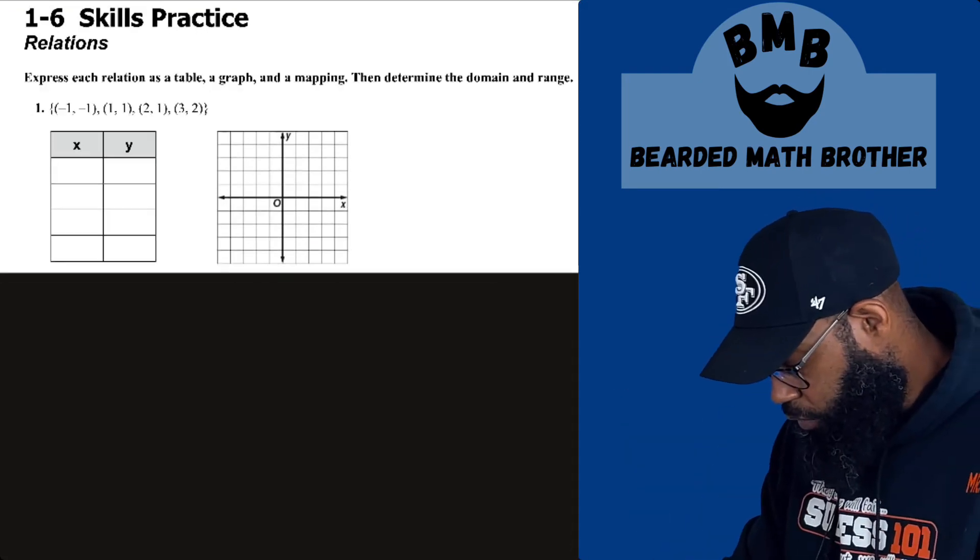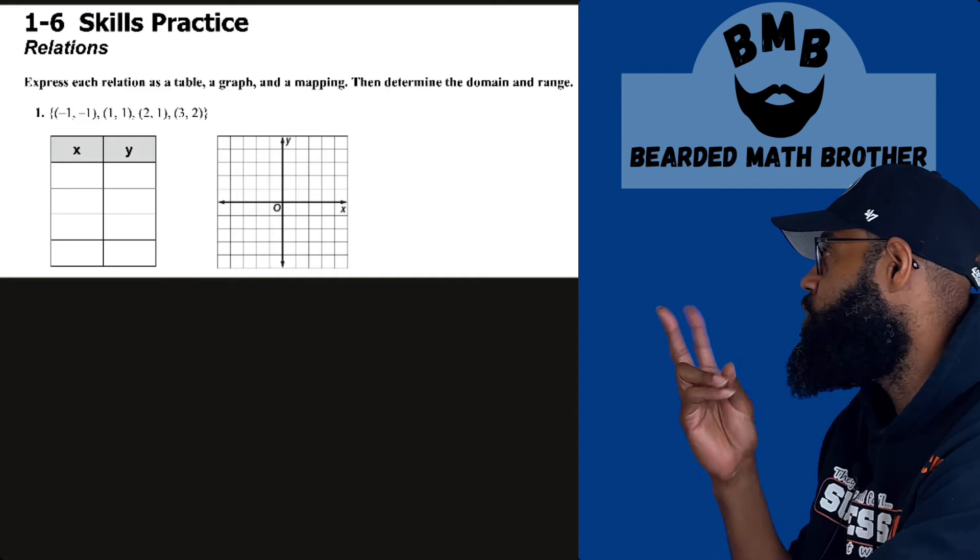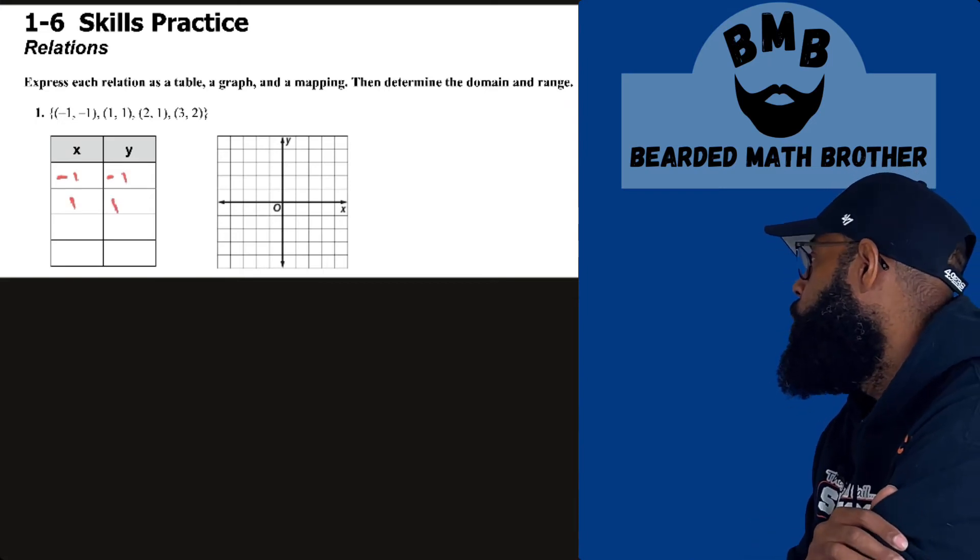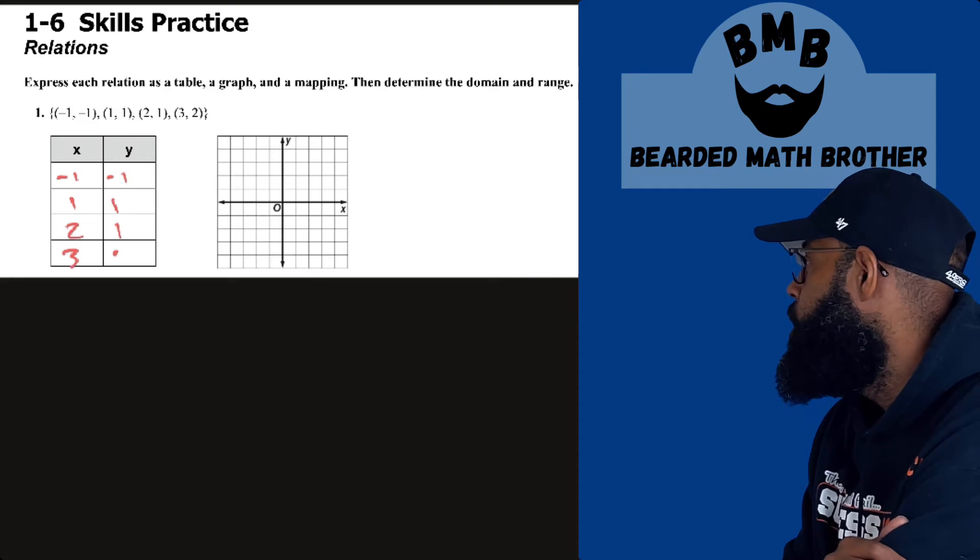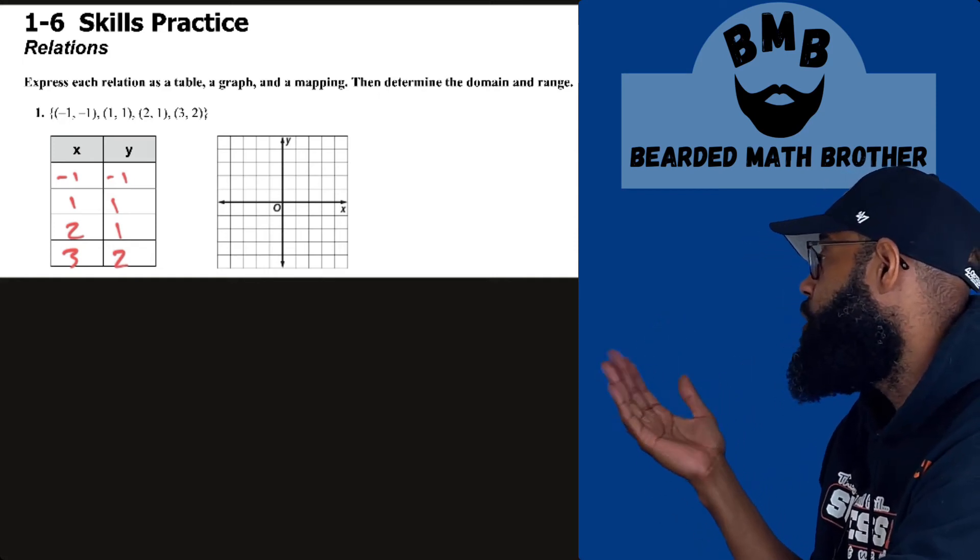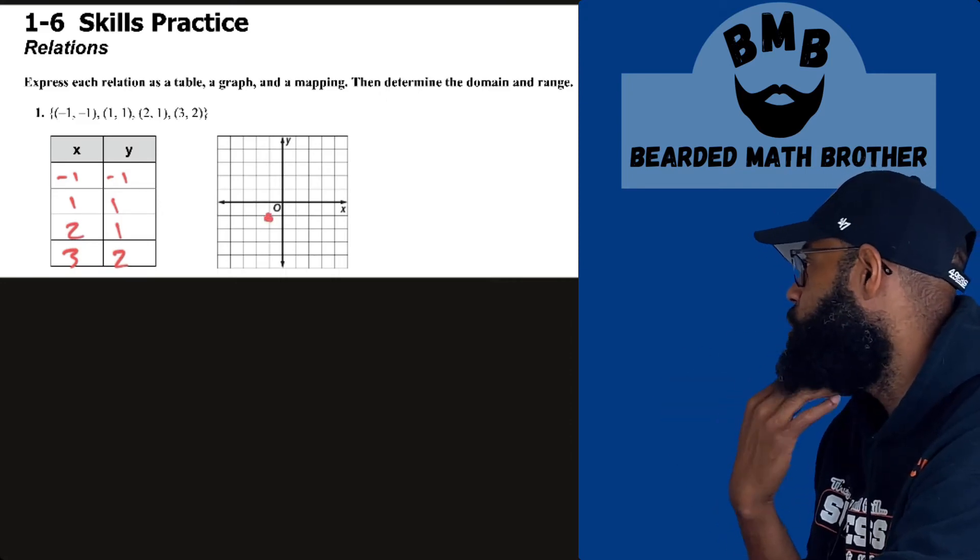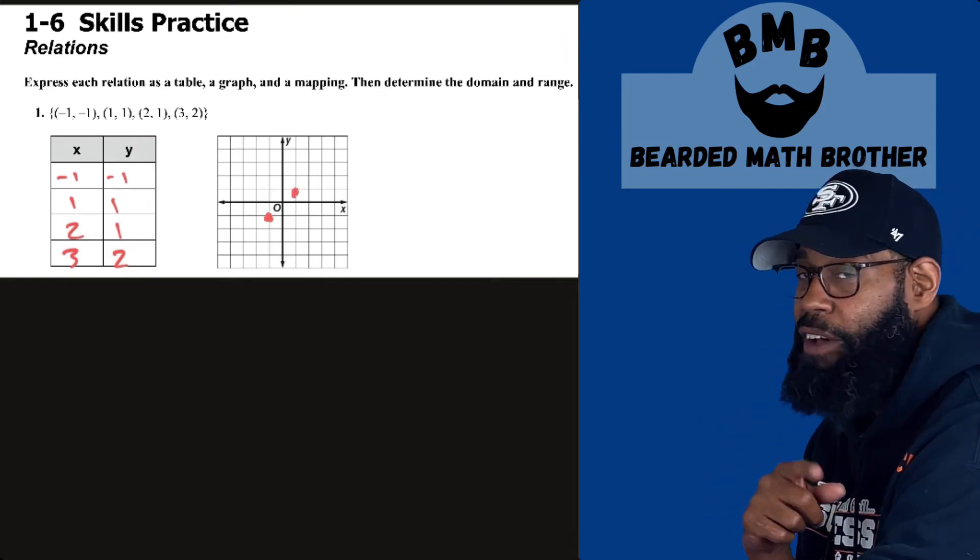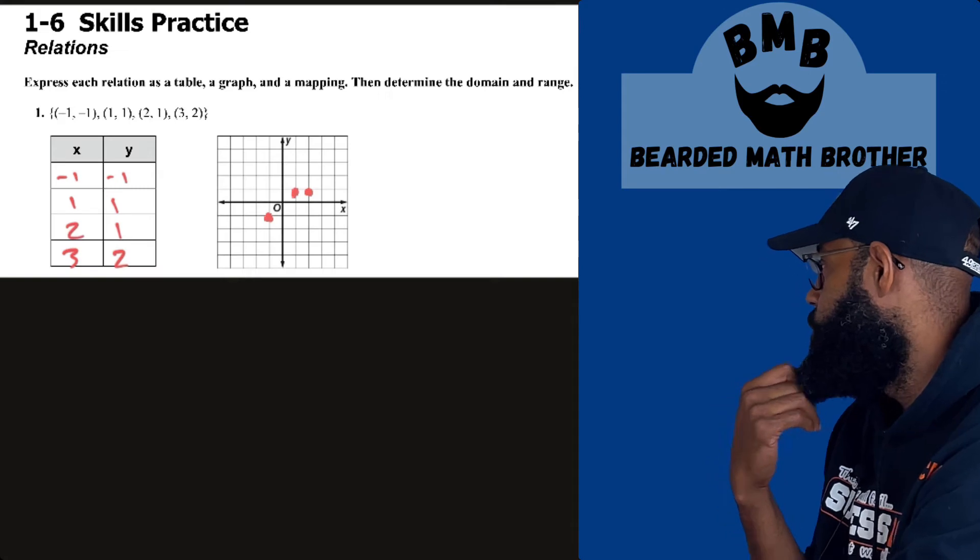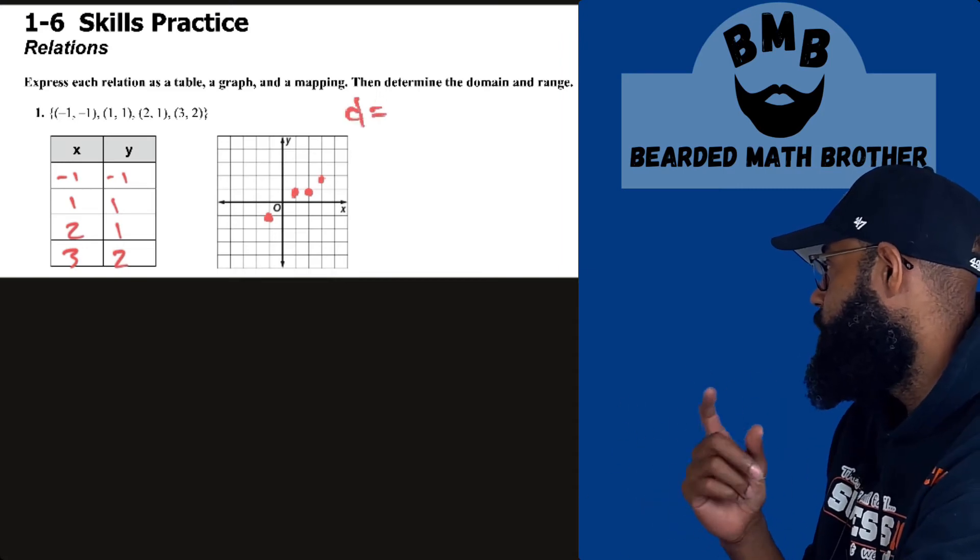And we're on. As I was saying, here's that first one. Express each relation as a table, a graph, and mapping. So there's three things we're going to do. For the first one, a table: X and Y, negative one negative one, one one, two one, and three two. Determine the domain and range. Well, X is my domain, Y is my range. But before I do that, let's go ahead and get our coordinates. Quadrant one, quadrant two, quadrant three, quadrant four. How well are you in graphing coordinates? I may make a mistake. Don't you dare laugh. Don't you put it in the comments. My editor will give me enough. But negative one negative one, one one, two one, and the last one, three two.